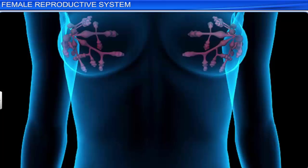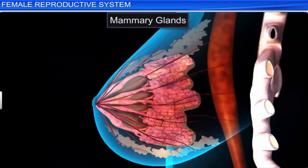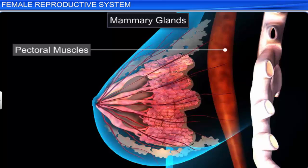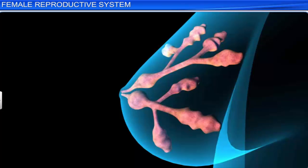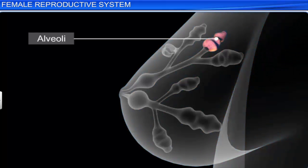The female reproductive system is supported by the mammary glands. The mammary glands, or breasts, are modified sweat glands that lie over the pectoral muscles. They contain glandular tissues and a variable amount of fat. Internally, each breast is divided into fifteen to twenty mammary lobes containing clusters of cells called the alveoli.